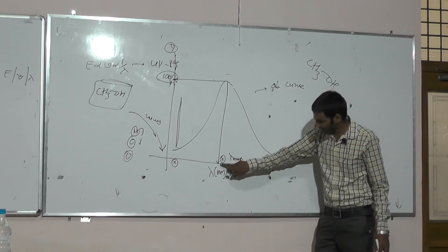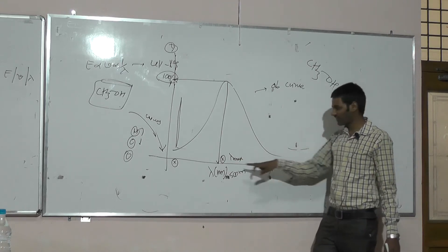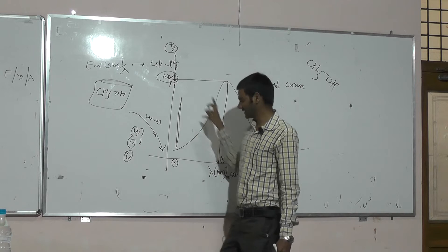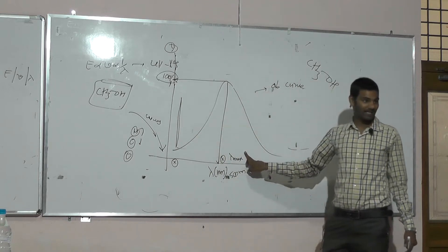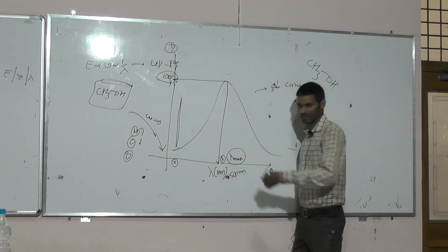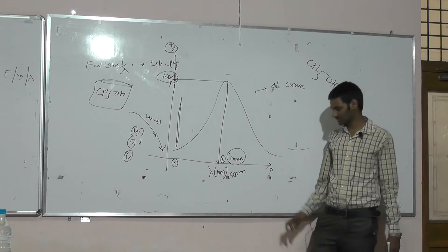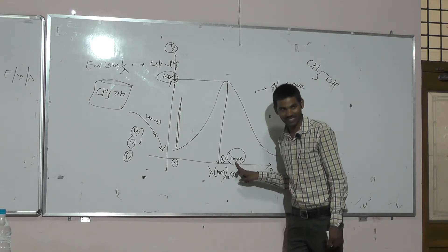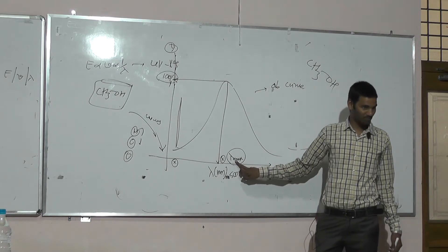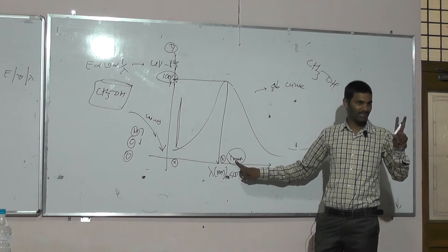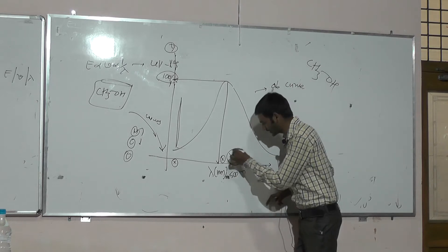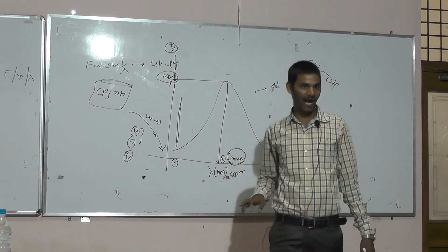What is the lambda max? The wavelength on the x-axis and the maximum absorption on the y-axis is called lambda max. We know around 1 lakh organic compounds are there in nature, each having their specific lambda max values. Lambda max value is characteristic and is a qualitative aspect, and because of these properties it is widely used.